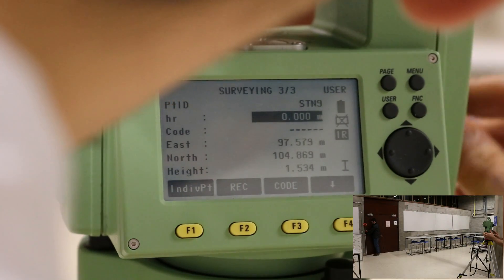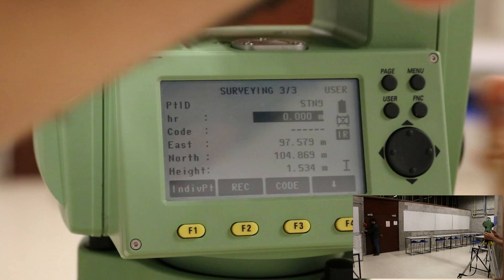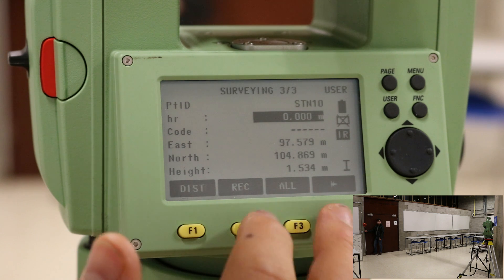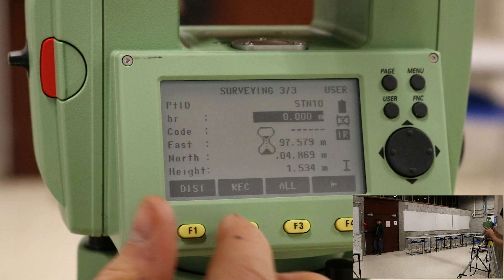Next, focus the instrument on the prism and get the crosshairs to align with the marks indicated on the top of the prism edge and do not focus on the center of the prism itself. Record the point by pressing the RC button.